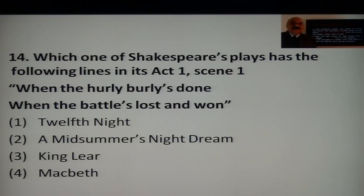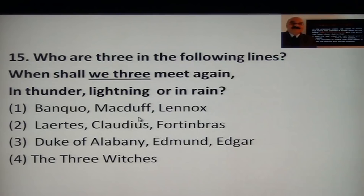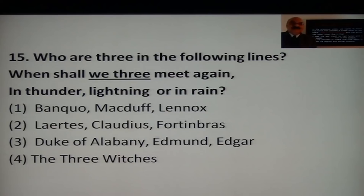One of the three witches says those lines to Macbeth. Who are the three referred to in 'When shall we three meet again'? Options: Banquo, Macduff, Lennox from Macbeth; Laertes, Claudius, Polonius from Hamlet; Duke of Albany, Edmund, Edgar from King Lear; or the three witches from Macbeth. The answer is the three witches.